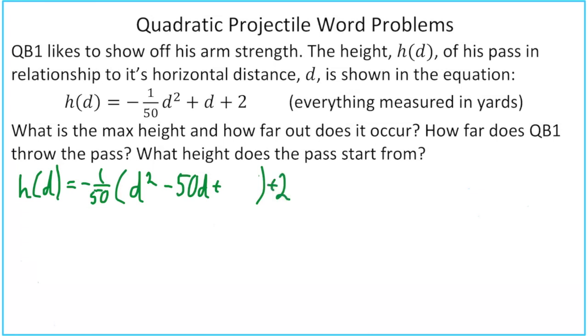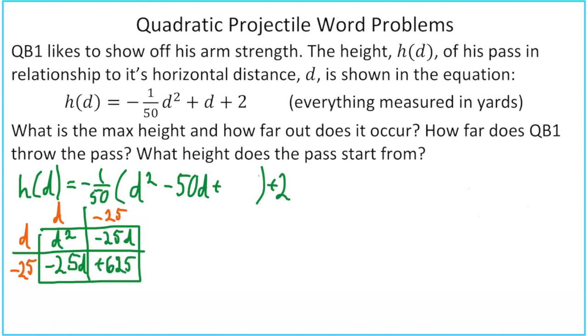Let's continue on by setting up our generic rectangle. And we'll go ahead and put our d squared in there. And then remember, you have to split the negative 50d into negative 25d and negative 25d. We can now start filling out the outside with d times d, and negative 25 and negative 25, which would give us our negative 25d's. Negative 25 times negative 25 gives us positive 625.